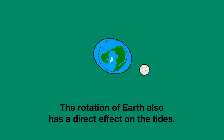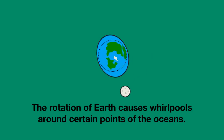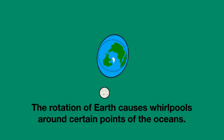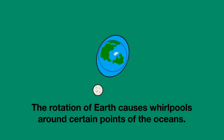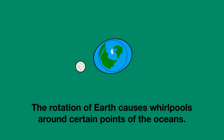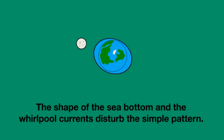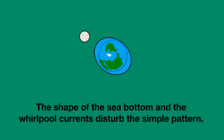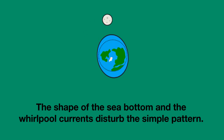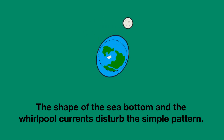The rotation of Earth also has a direct effect on the tides. The rotation of Earth causes the water in the oceans to move in big slow whirlpools around certain points of the oceans. So together, the shape of the sea bottom and the big whirlpool currents disturb the simple two high tides, two low tides picture.